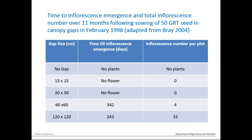This table looks at gap size in the pasture — so 15 by 15 means 15 centimetres by 15 centimetres. A colleague, Stephen Bray, planted 50 seeds in these gaps and looked at how long it took plants to mature and how many seed heads were produced in the following 11 months. As gaps increase, you get shorter periods for seed head development. Even up to a 30 by 30 centimetre gap, after 11 months there were actually no seed heads. Where there's no gap, there are no plants; where gaps are small, you've got no seed heads after that period.